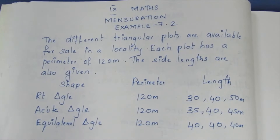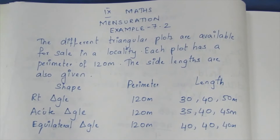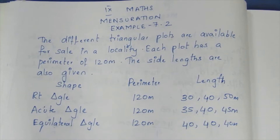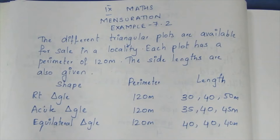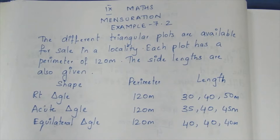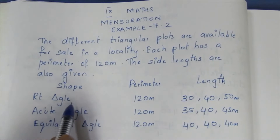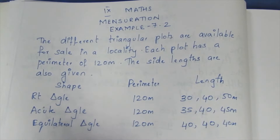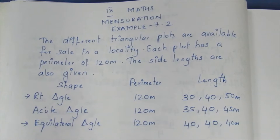Hello viewers, I am Ithli. In KNIFE MAX Mensuration example 7.2, the question involves different triangular plots available for sale in a locality. Each plot has a perimeter of 120m. The side lengths are given. We will consider three plots: one right triangle, one acute triangle, and one equilateral triangle.